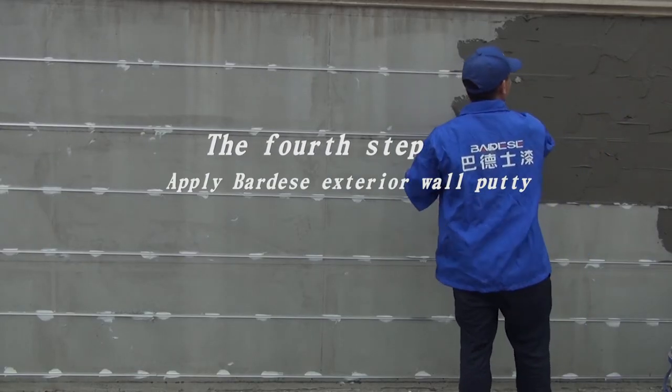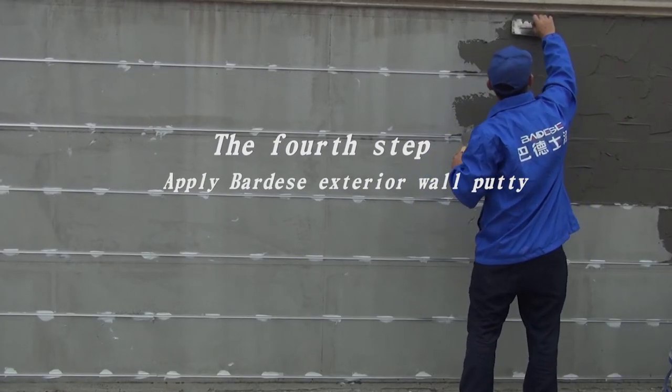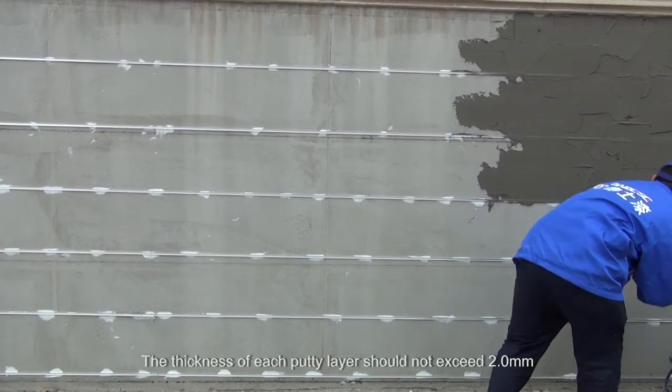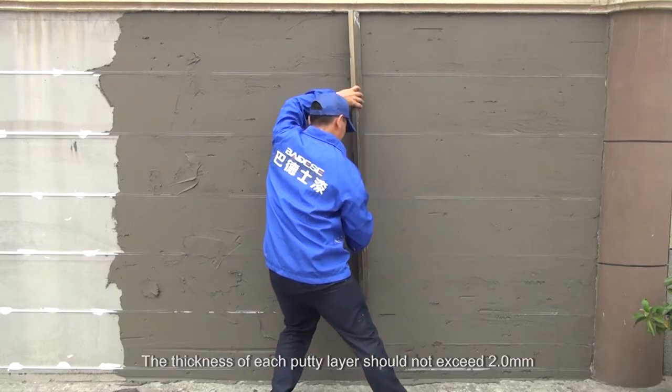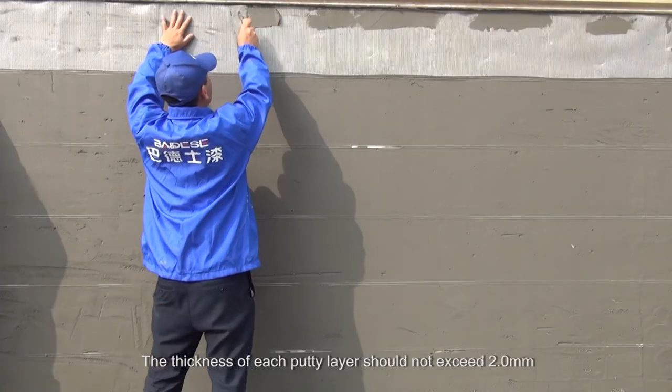The fourth step: apply Bardese's exterior wall putty. The thickness of each putty layer should not exceed 2.0 millimeters.